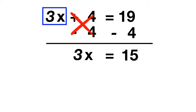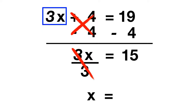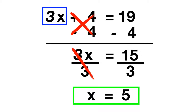From there, all that's left to cancel is this 3. We know that 3 is being multiplied by x, so we can cancel it by dividing by 3. The 3 divided by 3 cancels out, leaving you with just x. And on the other side of the equation, you have 15 divided by 3, which gives you your answer of 5.